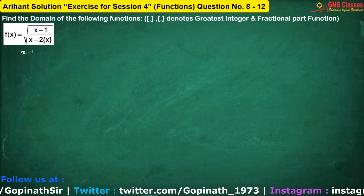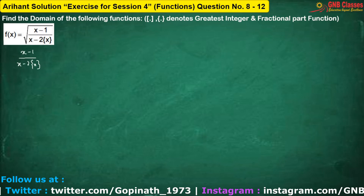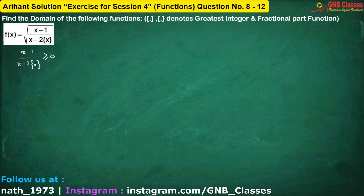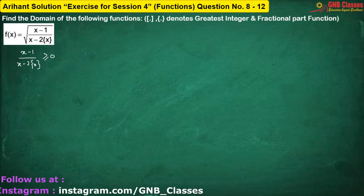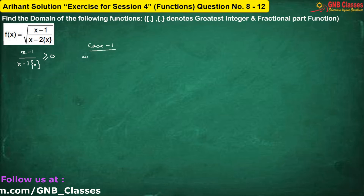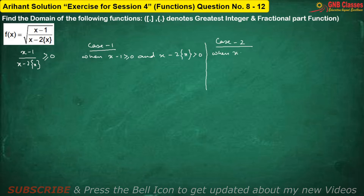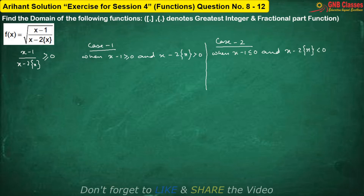To define the next function, the expression under the root sign has to be greater than or equal to 0. So here we are having two cases. Case 1: when both numerator and denominator are positive, their ratio is also positive. Case 2: if both are negative, then the ratio is also positive.